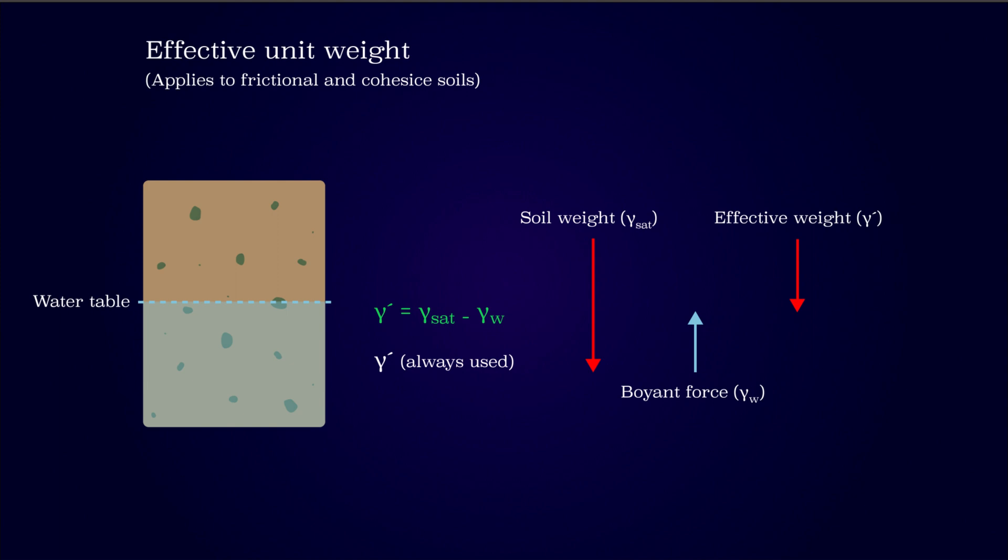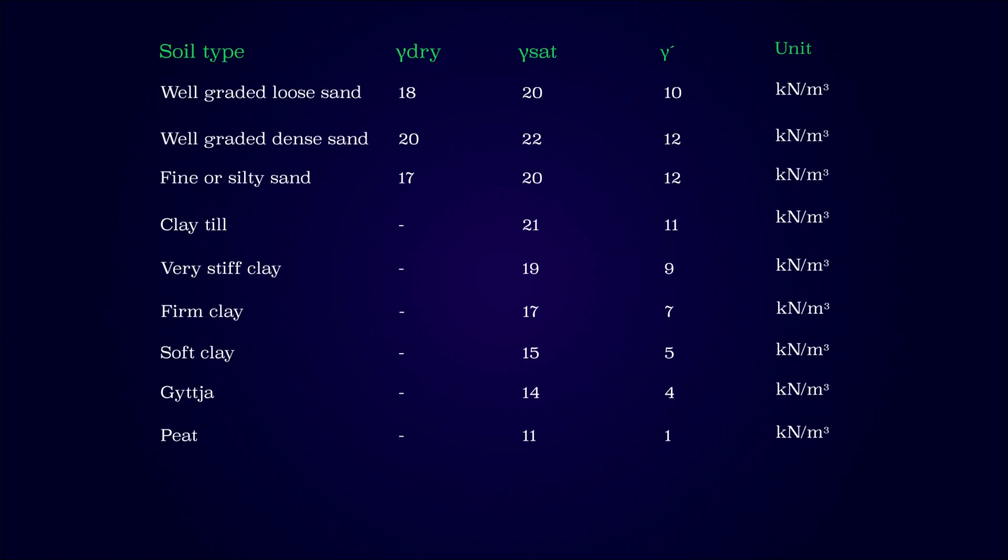The buoyant force is commonly simplified to 10 kN per cubic meter, as this corresponds to the simplified unit weight of water. The unit weight of soil varies greatly with the composition and type. The table presented shows the general unit weight ranges for specific soil types.